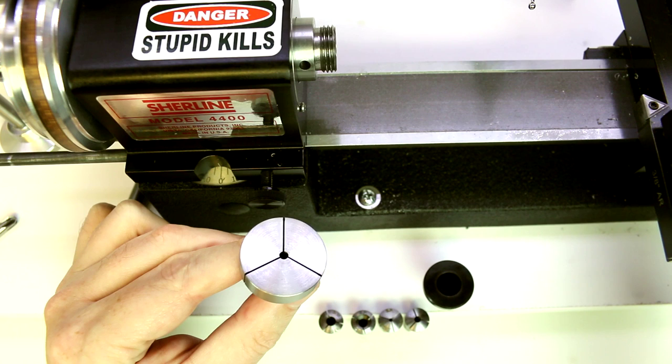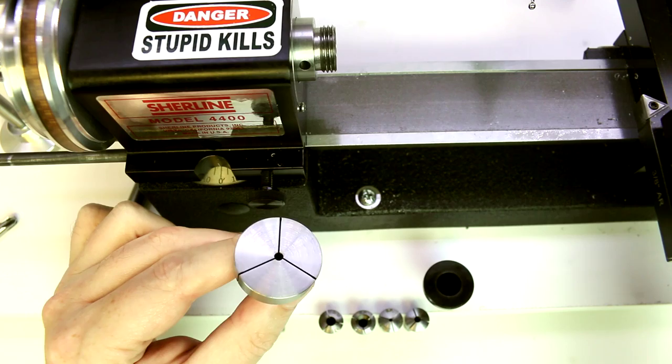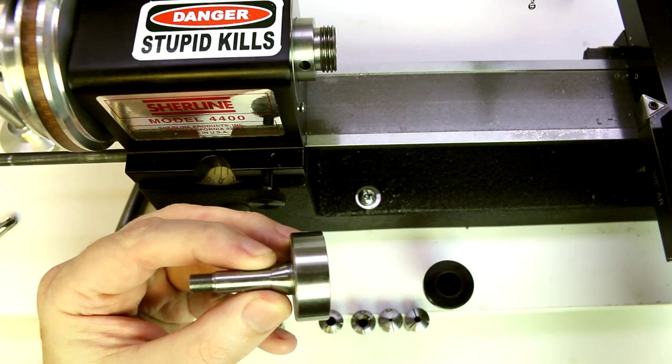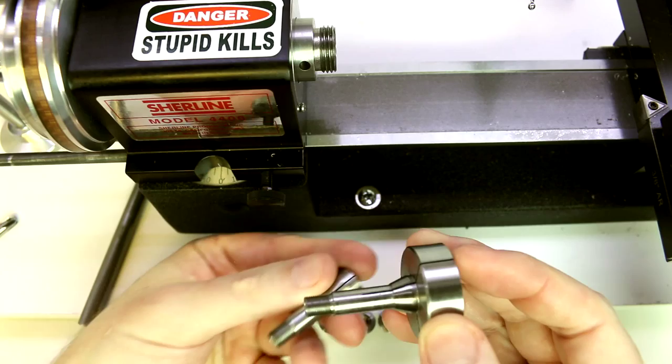I wanted to show you another additional option for this WW collet holder, and that's this piece here, which is usually referred to as a pot or step collet, or a pot or step chuck. This is a blank, so it's designed for you to make it to whatever size you need. On the back we have that same shape as we have on our other collets.